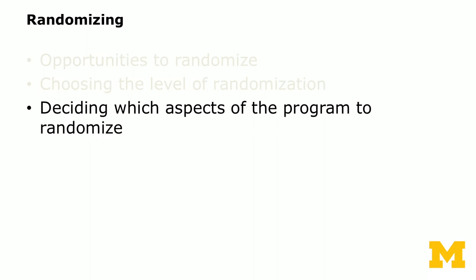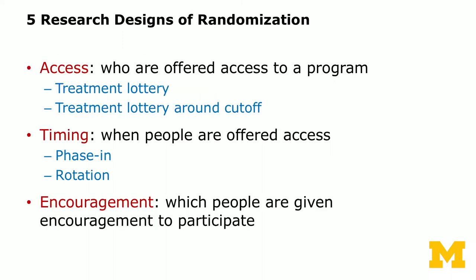We'll discuss five practical research designs for randomization based on three aspects: access, timing, and encouragement. For access, there's the treatment lottery and the treatment lottery around a cutoff. For timing, there's the phased-in design and the rotation design. The fifth design is the encouragement design, where experimenters choose which people are given encouragement to participate in a program.